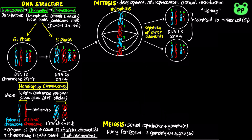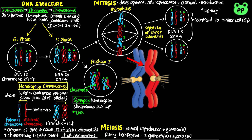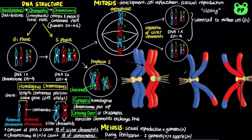Meiosis involves two rounds of cell division, each containing prophase, prometaphase, metaphase, anaphase, and telophase. During prophase I, each pair of homologous chromosomes loosely pairs up as a tetrad, aligned gene by gene in a process known as synapsis. Each tetrad usually has one or more X-shaped regions known as chiasmata, where non-sister chromatids of each pair of homologous chromosomes exchange DNA segments, meaning that a paternal chromatid exchanges DNA with a maternal chromatid. This process is known as crossing over, or genetic recombination, which serves as one mechanism to increase the genetic diversity of gametes.